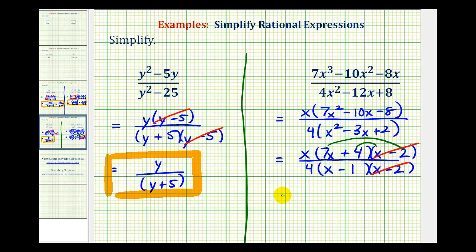Nothing else simplifies, so we have x times the quantity 7x plus 4, all over 4 times the quantity x minus 1. This is our simplified rational expression. I hope you found these examples helpful.